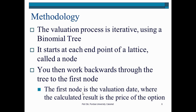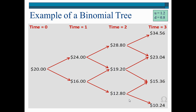In this introductory presentation, we explain the motivation, beginning with the methodology they employed. The valuation process is iterative, using a binomial tree. This binomial tree starts at each end point of a lattice — the lattice being the forks that mark the nature of the tree. The end point of a lattice is called a node, and you work backwards through the tree up to the first node, which is where you determine the value of the option.